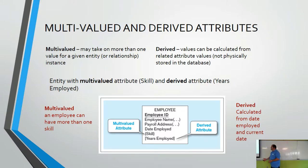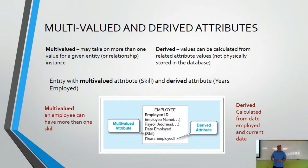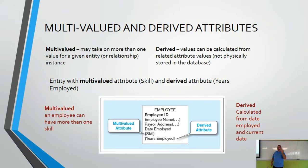A derived attribute is one a lot of people have trouble with — not because they don't understand what it is, but because they don't know when to use it. Consider these attributes: first name, last name, date of birth, height, age. Which one is derived? Age — because age equals today's date minus date of birth. If you can calculate the answer from data you already have, that's a derived attribute.